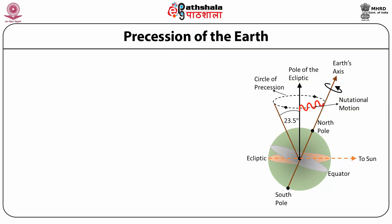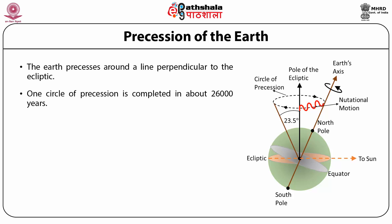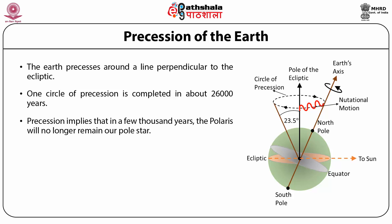A spinning top not only rotates on its axis but its axis also rotates — this rotation of the axis is called precession. The earth is not a perfect sphere; it has a slight bulge at the equator. The gravitational field of the sun, moon, and to a much lesser extent the planets causes the earth to precess. The axis of earth describes a cone around the line perpendicular to the plane of the ecliptic. The direction of precession is clockwise if we look down on the earth from the north, and one circle of precession is completed in about 26,000 years.